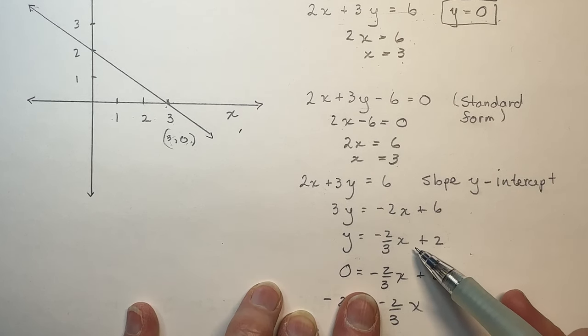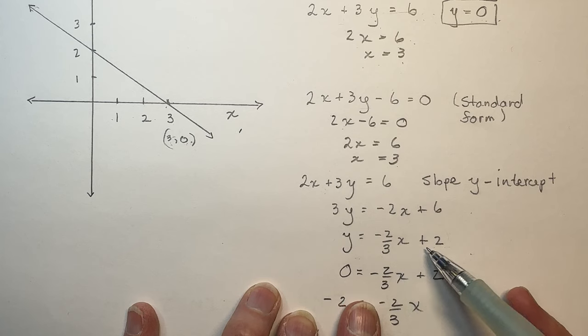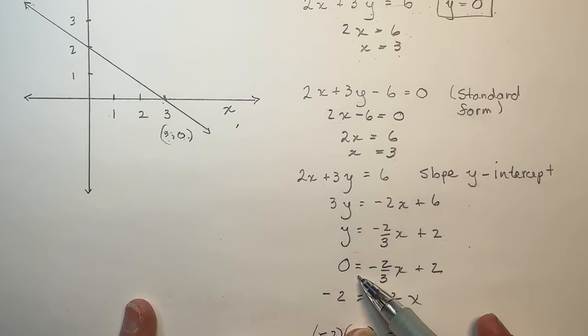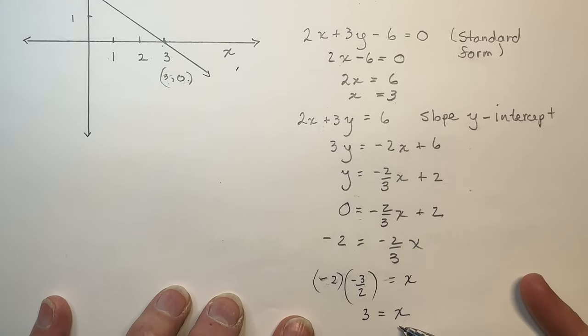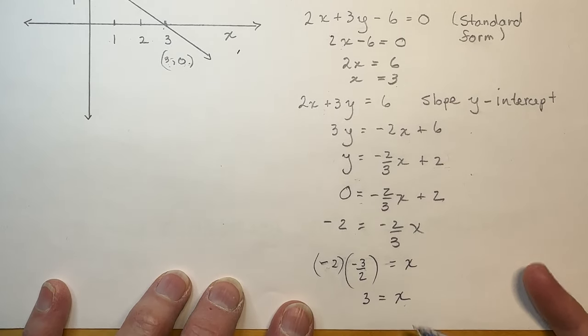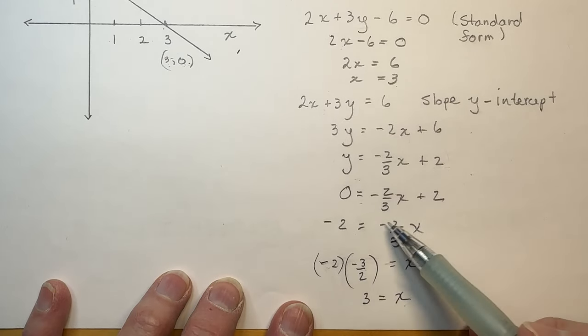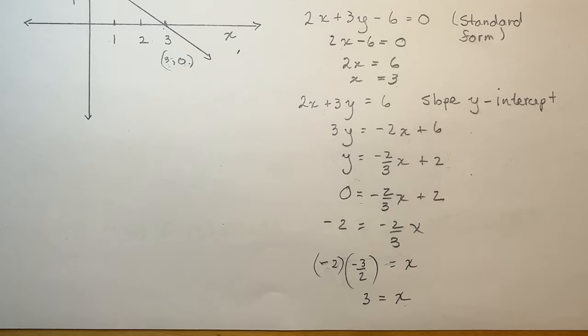This is the equation of the line in slope y-intercept form. So if it was given in this format, it's a little bit more work for you to solve for x, but it can be done just like that. Don't forget to invert and multiply your fraction, and you would get x equals 3.